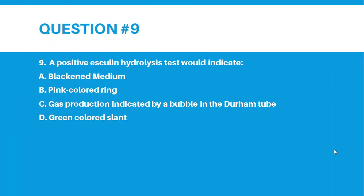Number 9. A positive esculin hydrolysis test would indicate: Letter A, A blackened medium. Letter B, A pink colored ring. Letter C, Gas production indicated by a bubble in the Durham tube. Letter D, A green colored slant. And the correct answer for number 9 is letter A, A blackened medium.